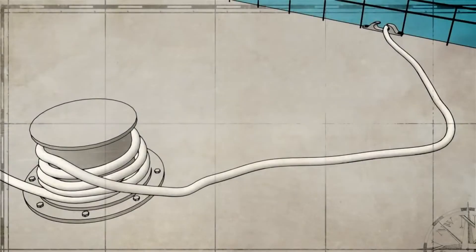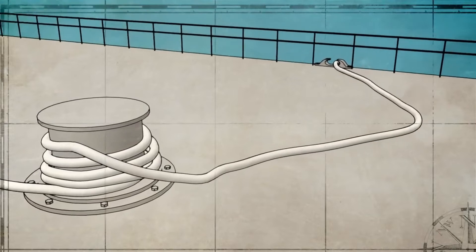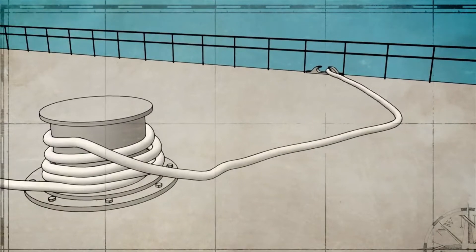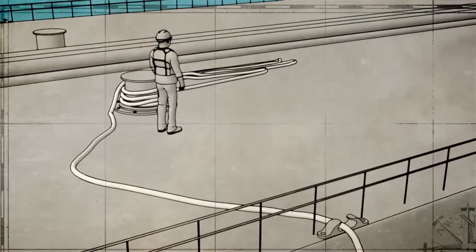A loop, coil, or section of loose line can injure or kill if the line suddenly tightens. These hazards are commonly known as bites.